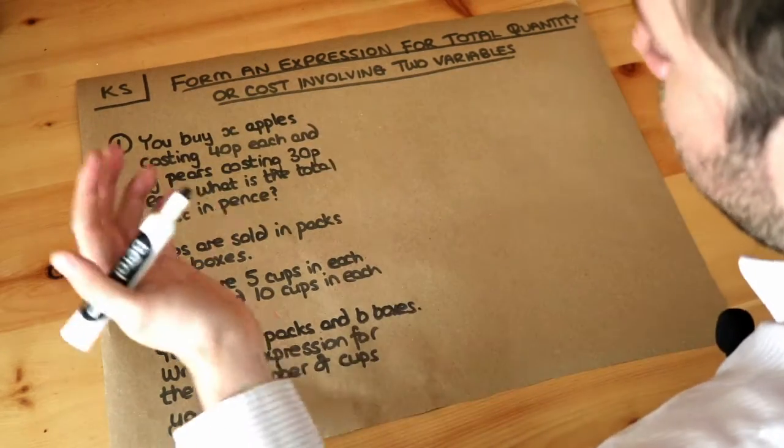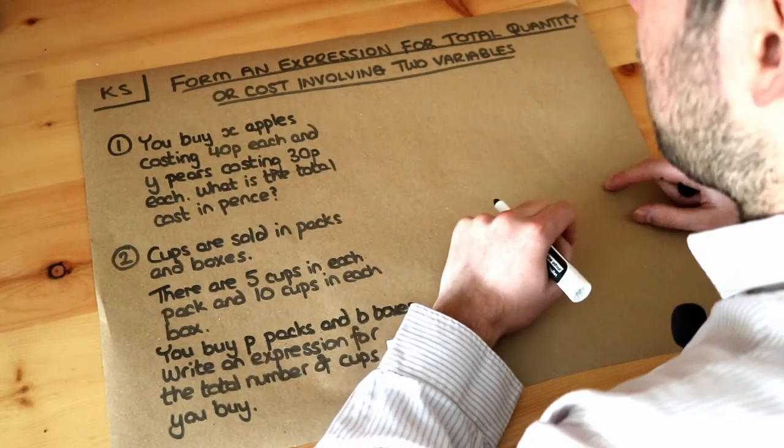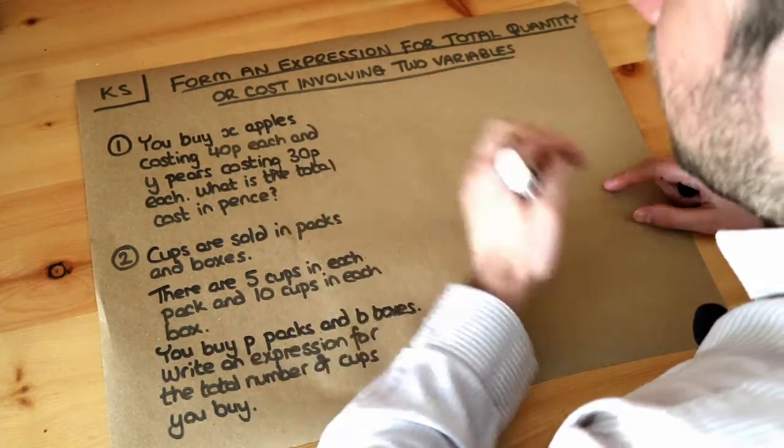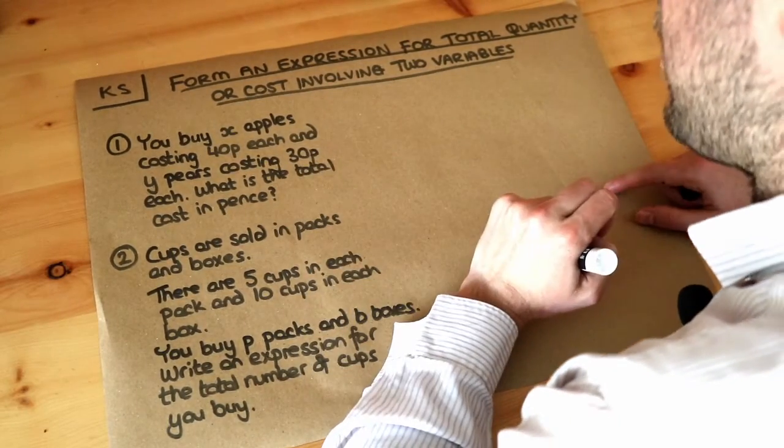There might be some additional information that comes in later that allows us to work out how many apples there are, but for the moment we don't know. We're just going to call it x apples. We're using a letter, a variable, to represent an unknown value.